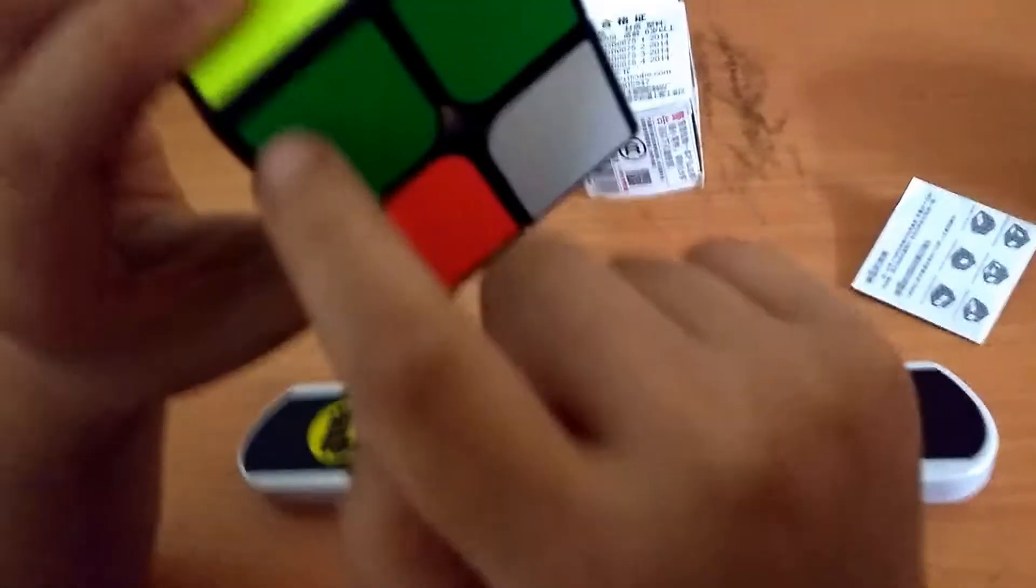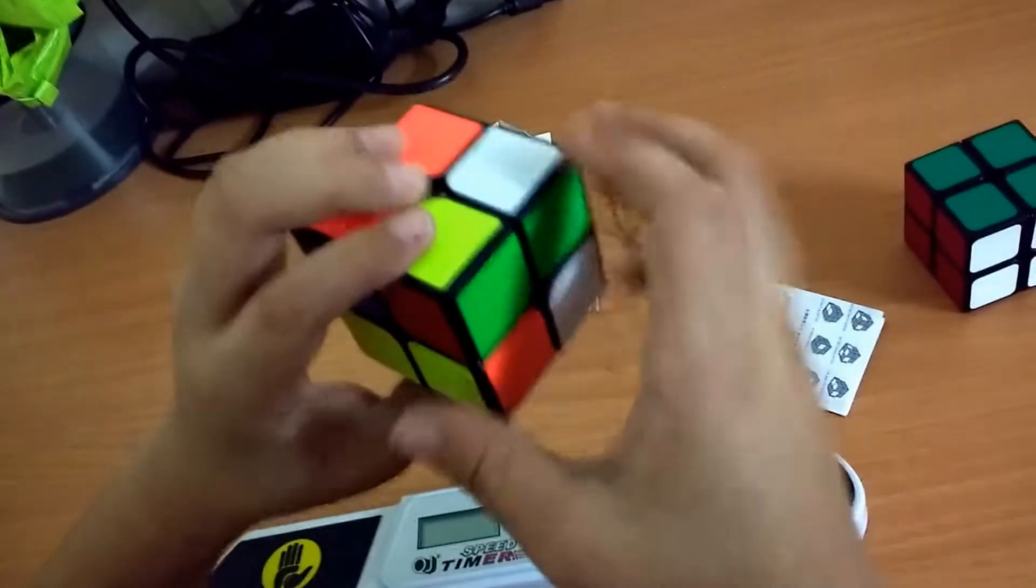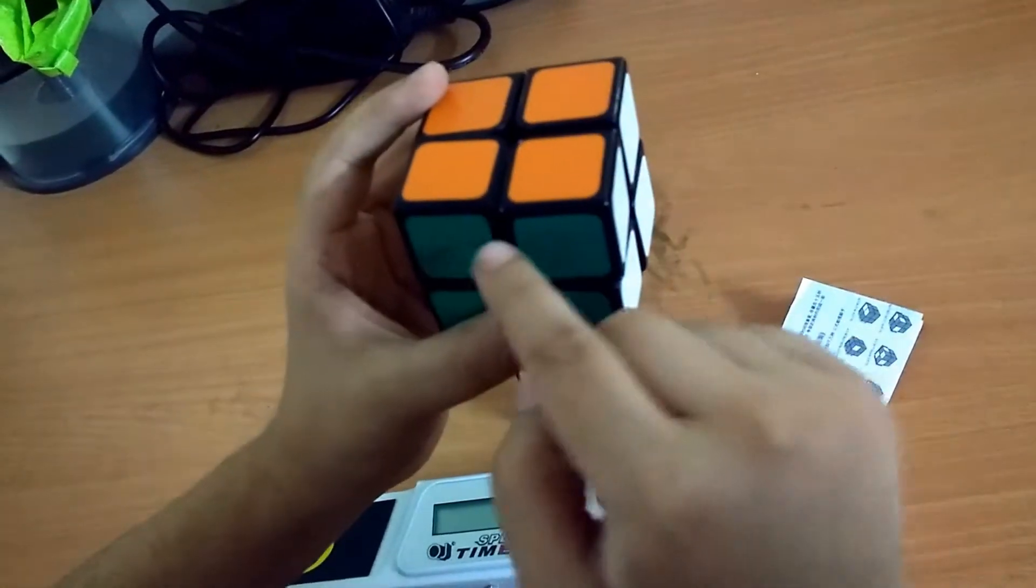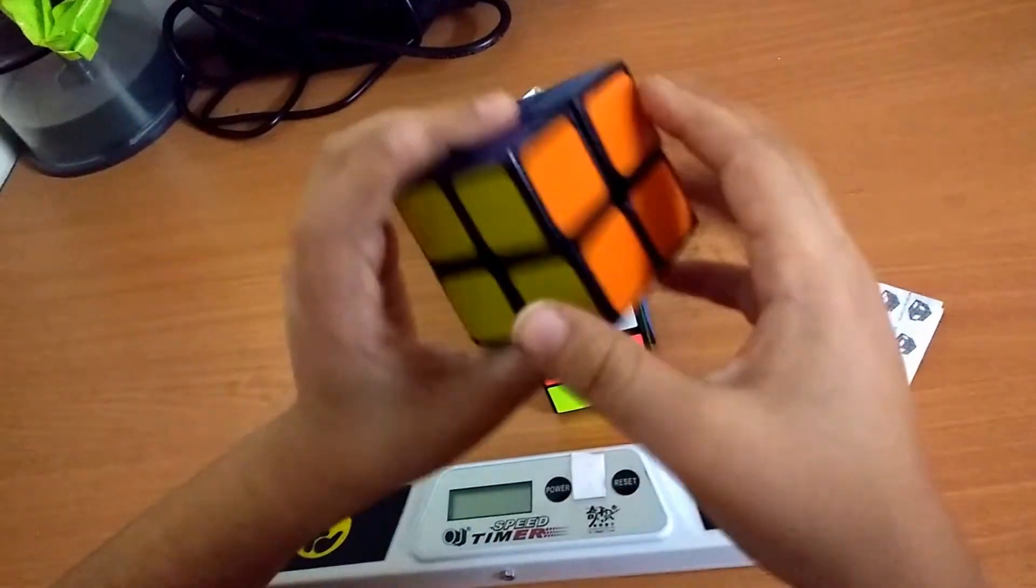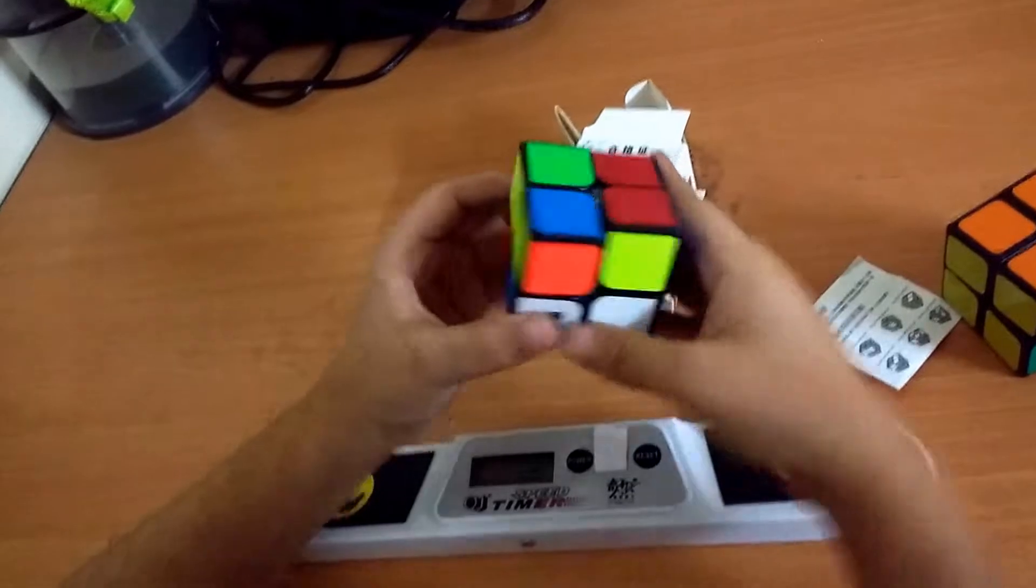Like on some cubes like the Shengshou 2x2, they are a little short of the side, so they are smaller stickers. But I actually enjoy these stickers. I think these are half-bright stickers, but it's not a problem—they're quite good stickers, actually.